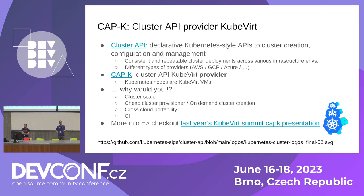It has different types of providers: AWS, Google, Azure. There's also a particular provider — the one we care about — which is KubeVirt. This means that the cluster you get is implemented using KubeVirt virtual machines as Kubernetes nodes.